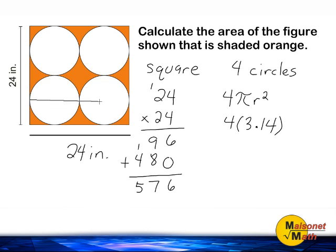If we take the width of our square and move it directly above and run it as the diameter of both of the circles from left to right, we can clearly see that each circle must have a diameter of 12, because both diameters is equivalent to the width of this square.